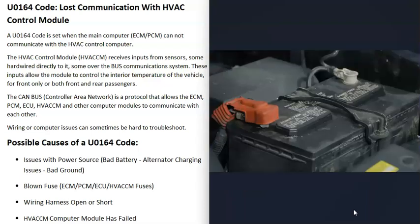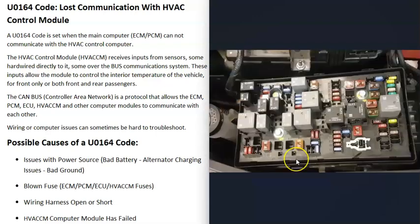The first thing to do whenever you have any kind of computer problem inside a vehicle is to check your battery — make sure it's good, all connections are good, and there's no corrosion. All these computers need a good stable power supply; a bad power supply can throw them off and cause weird behavior. Usually a bad power supply will also trigger other computer or control module errors, but any power supply problem going to the HVAC control module will cause issues.